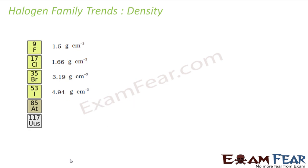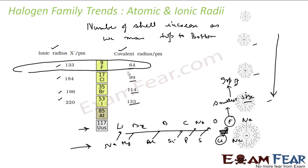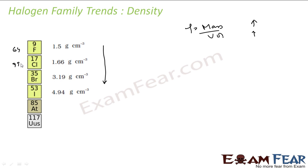Let's talk about density. Density increases down the group because density equals mass divided by volume. As we go down the group, both volume and mass increase, but mass increases at a higher rate. The covalent radii values are approximately 64, 99, 114, and 133 pm going down the group.